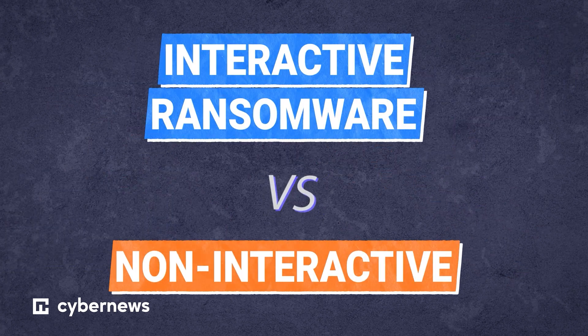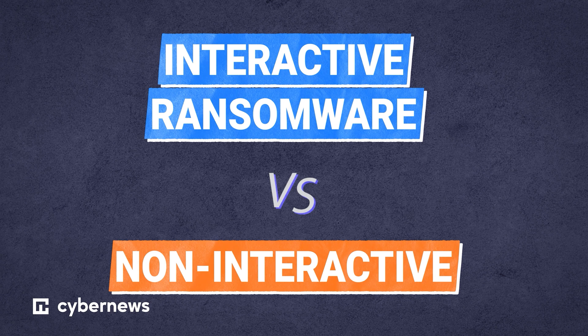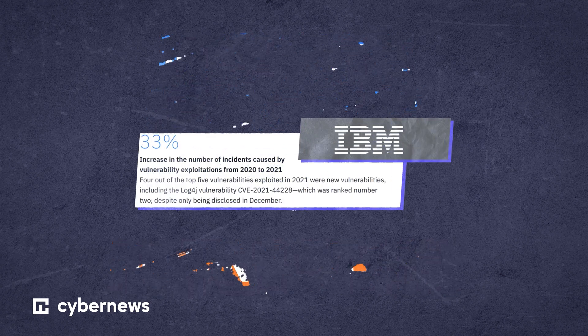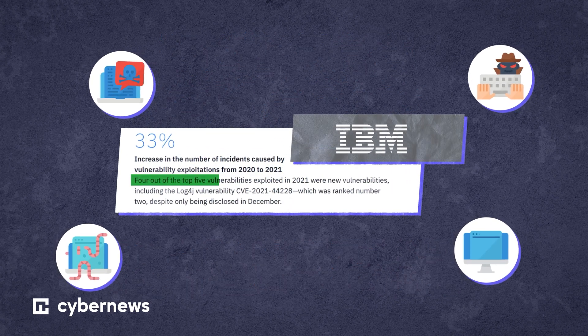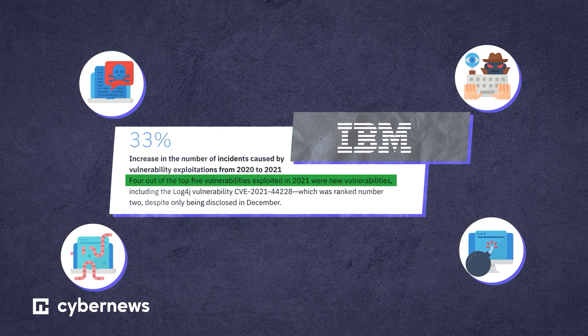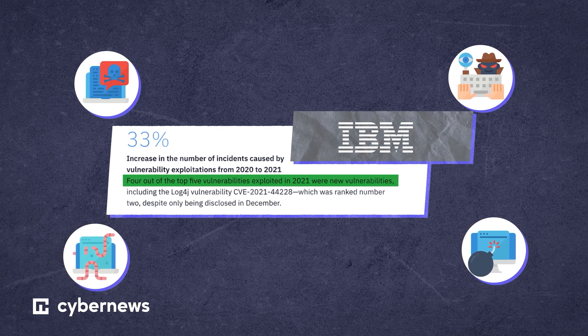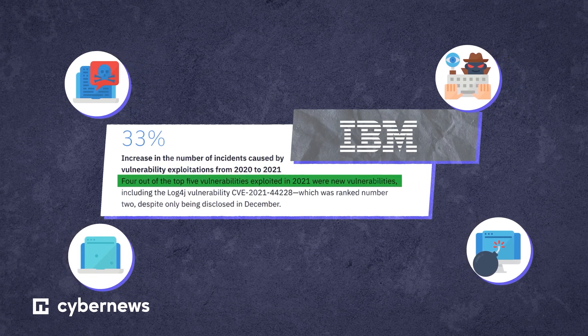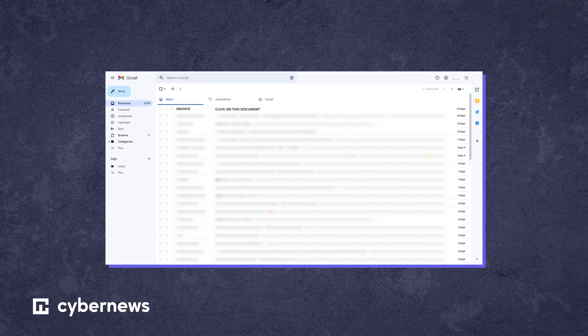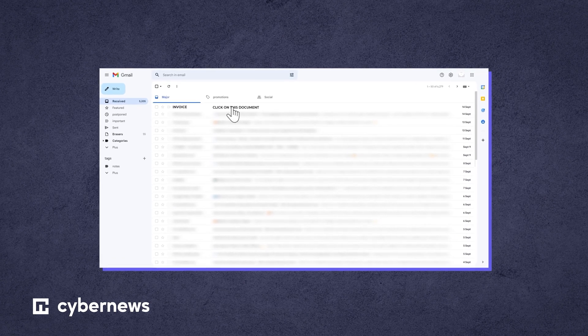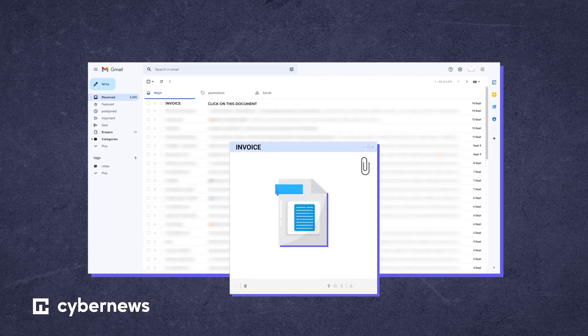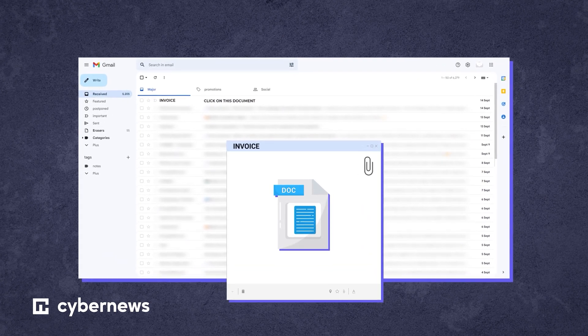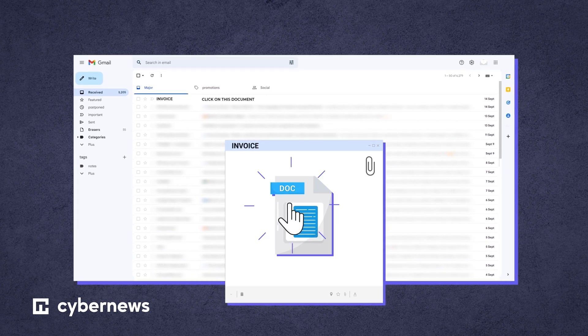Cybercriminals use various attack vectors, old and new. Surprisingly, an IBM report showed that four of the top five vulnerability exploitation methods used in 2021 were in fact brand new. Yet how does a ransomware attack actually happen? Speaking hypothetically, you receive an invoice in a Microsoft Word document. You're rushing to get ready and without a thought, you click it.